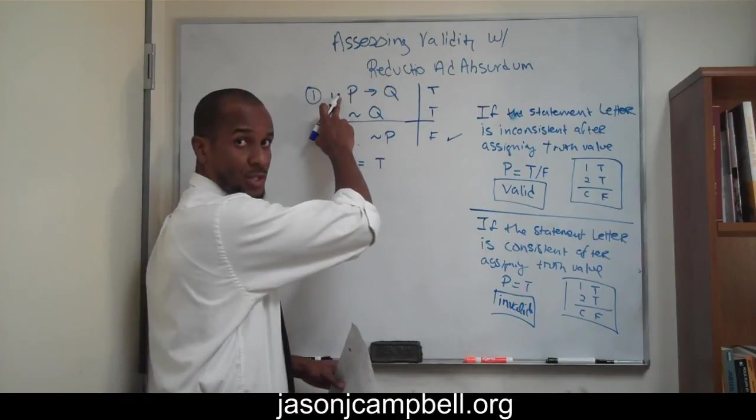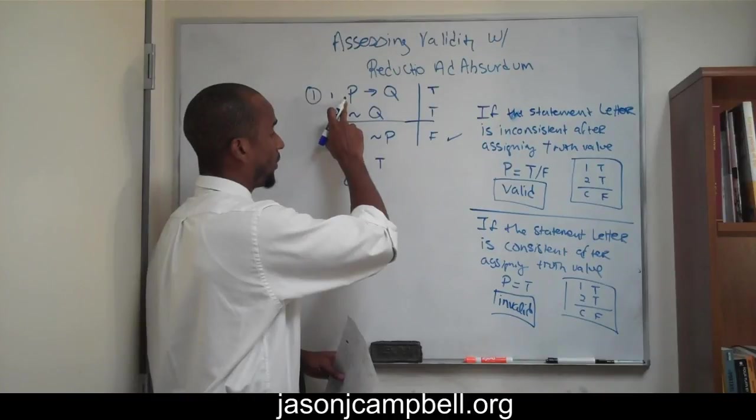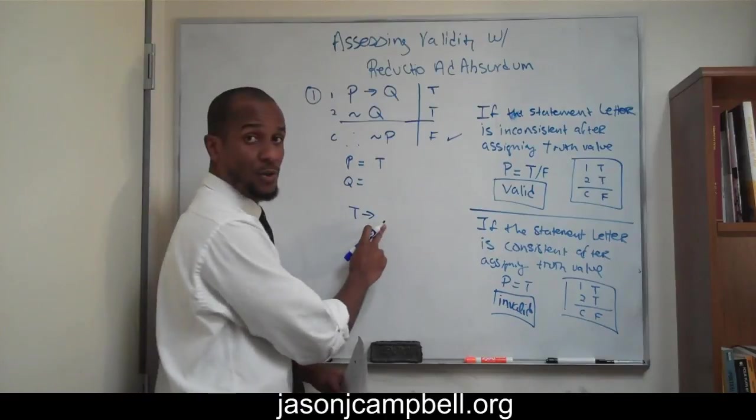Now, we go up here to try and satisfy premise one. We substitute in true for our P. So if this is true, then we recognize Q cannot be false.